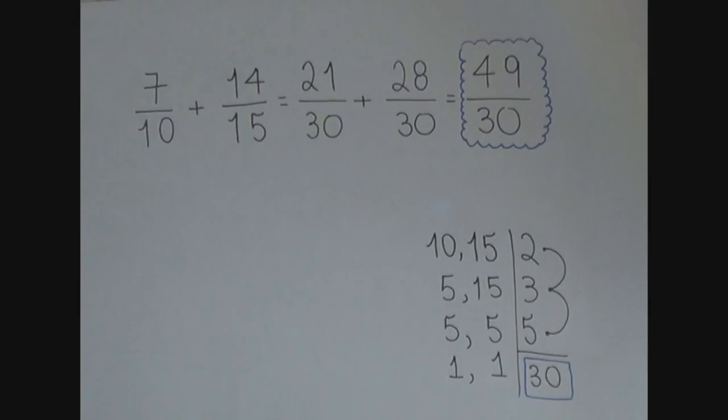Great. What can we say about the fraction 49 over 30? We can say that 7 over 10 plus 14 over 15 equals 49 over 30. What else can we say?